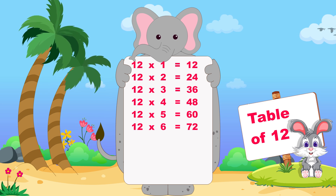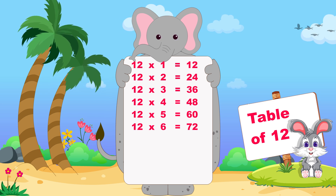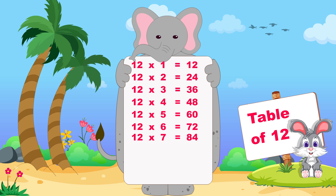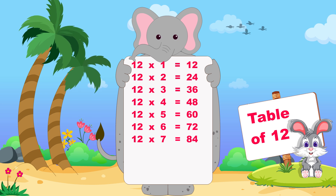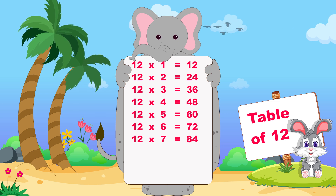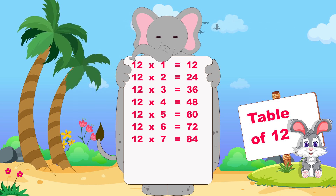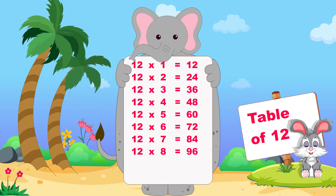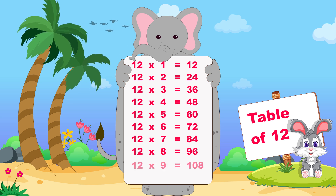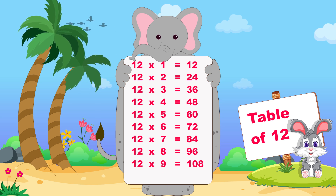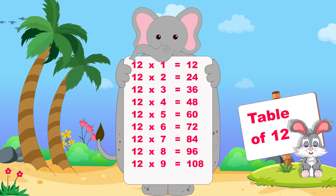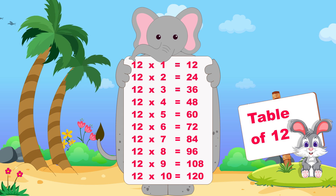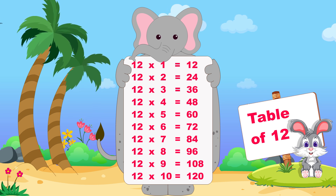Twelve sixes are seventy-two, twelve sevens are eighty-four, twelve eights are ninety-six, twelve nines are one hundred eight, twelve tens are one hundred twenty.